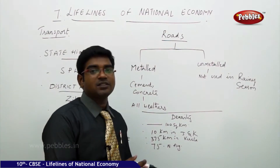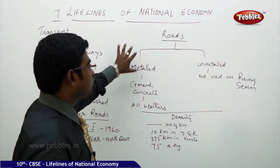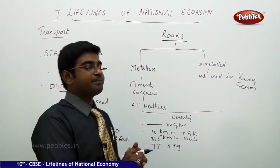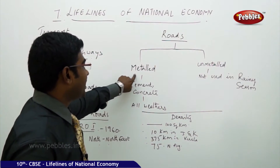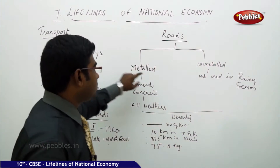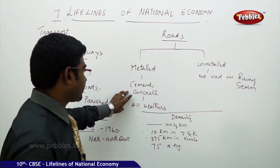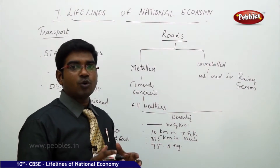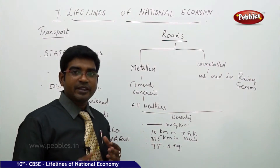Coming to the categorization of roads, roads are generally categorized based on their basic nature — how they are made or built. Roads are categorized into metalled and unmetalled roads. Metalled roads are roads which are built with cement and concrete, and these are very strong roads useful in all weather and climatic conditions.